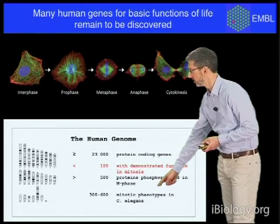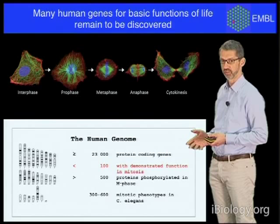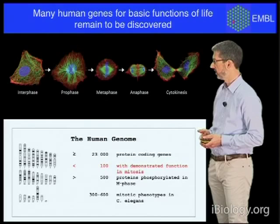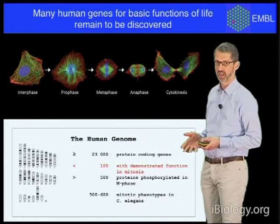We knew from model organisms such as the roundworm C. elegans that over 300 genes are required for division. So clearly we were lacking a lot of the knowledge in humans to understand this process comprehensively.